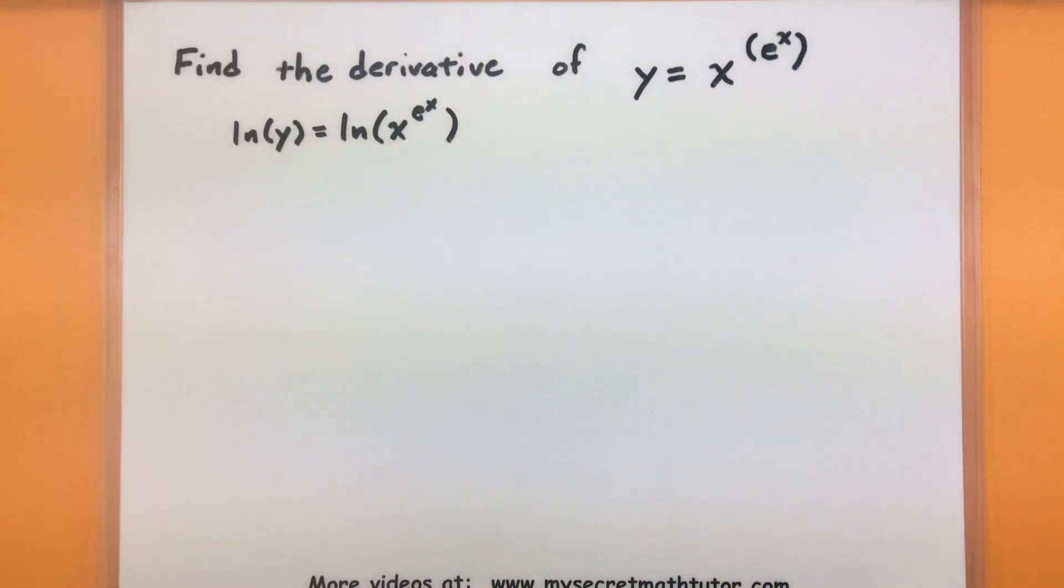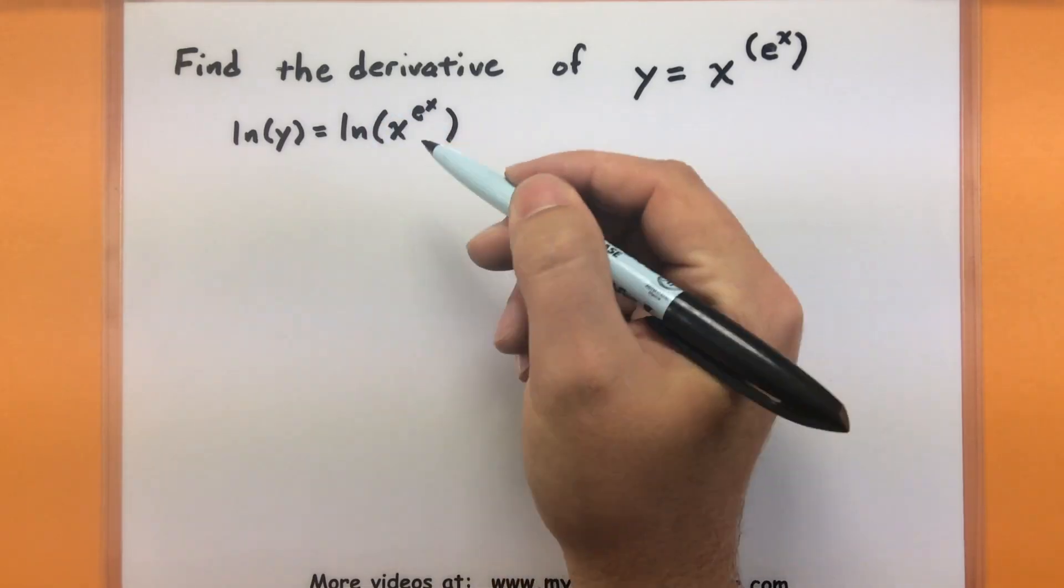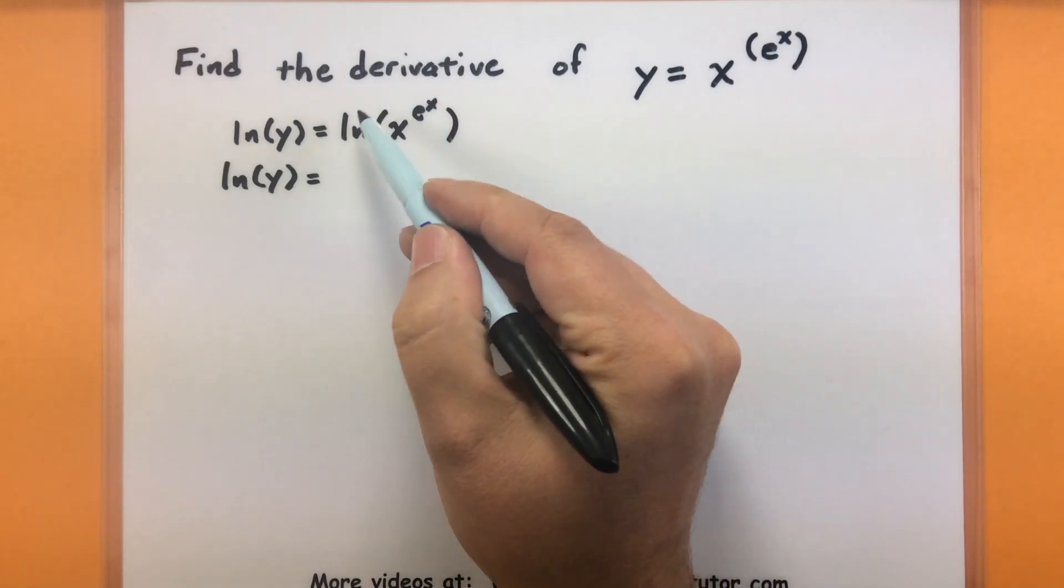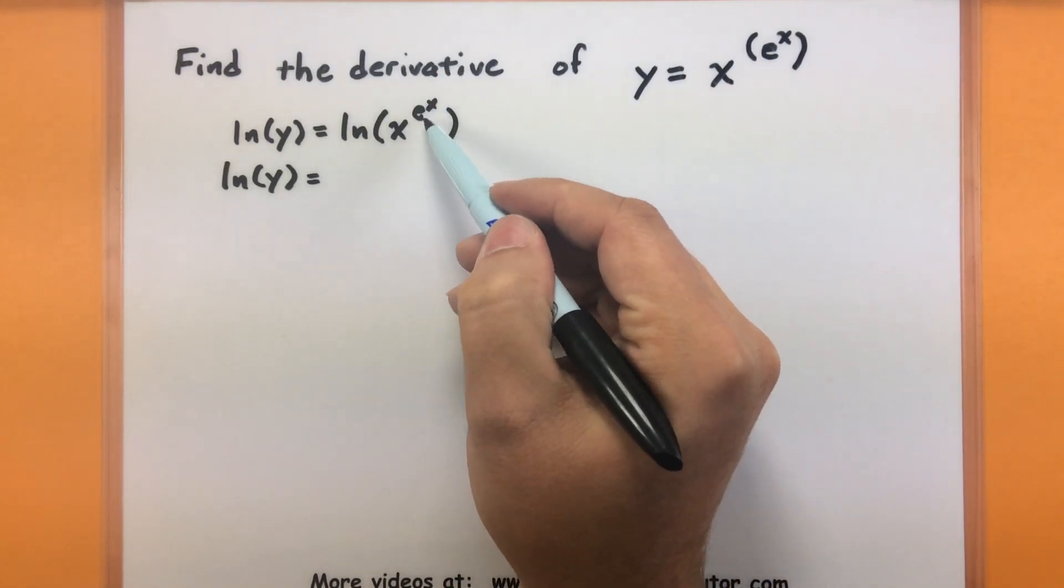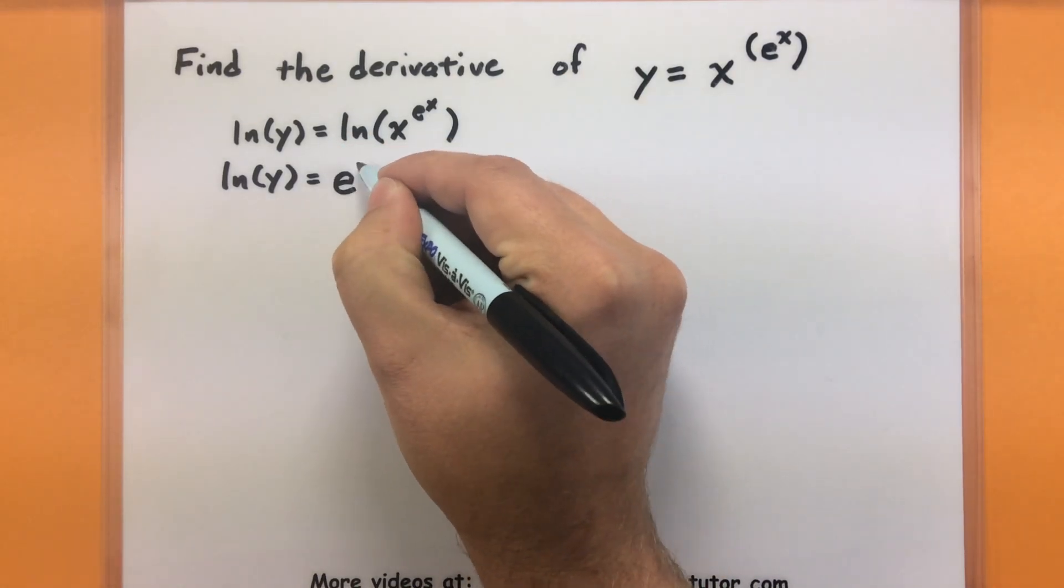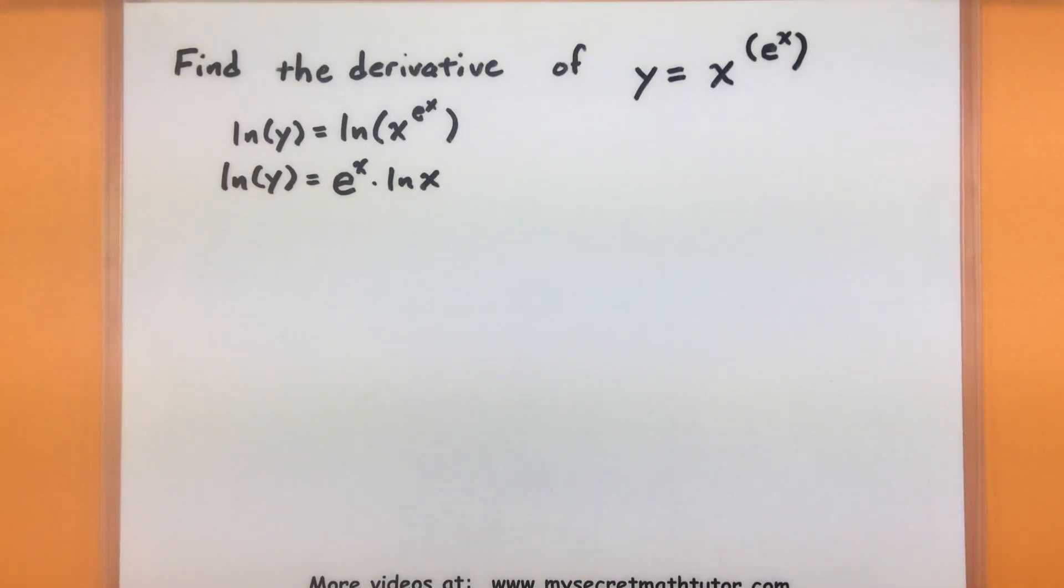Now immediately it looks a little bit more complicated, but because of our laws of logarithms, it's going to start to simplify. And over here is really where it's going to shine. So natural log of y on the left side, nothing really changing over here. Over here, since I have a power inside that logarithm, I can bring it out front and write this as e to the x multiplied by natural log of x. So just by taking the natural log and following its rules, I've now turned my exponential problem into something that really just has some multiplication in it. Okay, on to the next step.